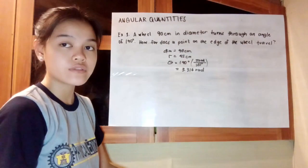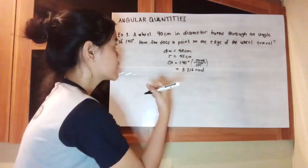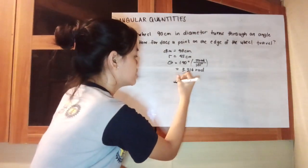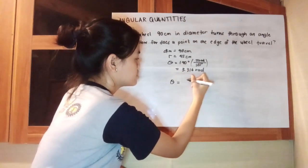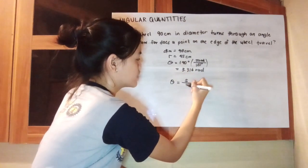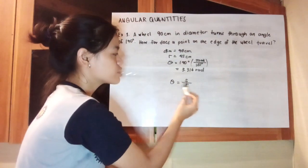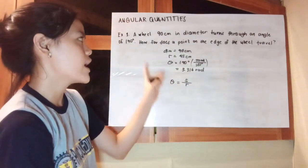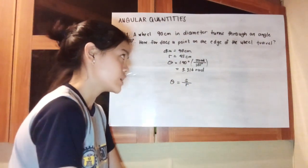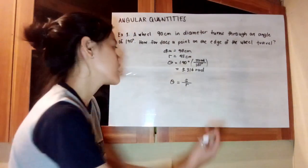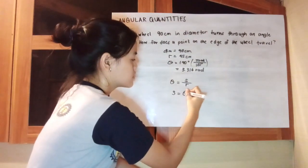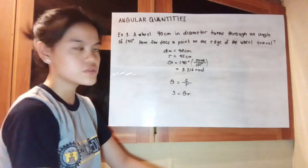Now that we have our given values, we can solve for this problem using our formula. Theta is equivalent to distance over radius. Since we're looking for the distance, S is equivalent to theta times radius.